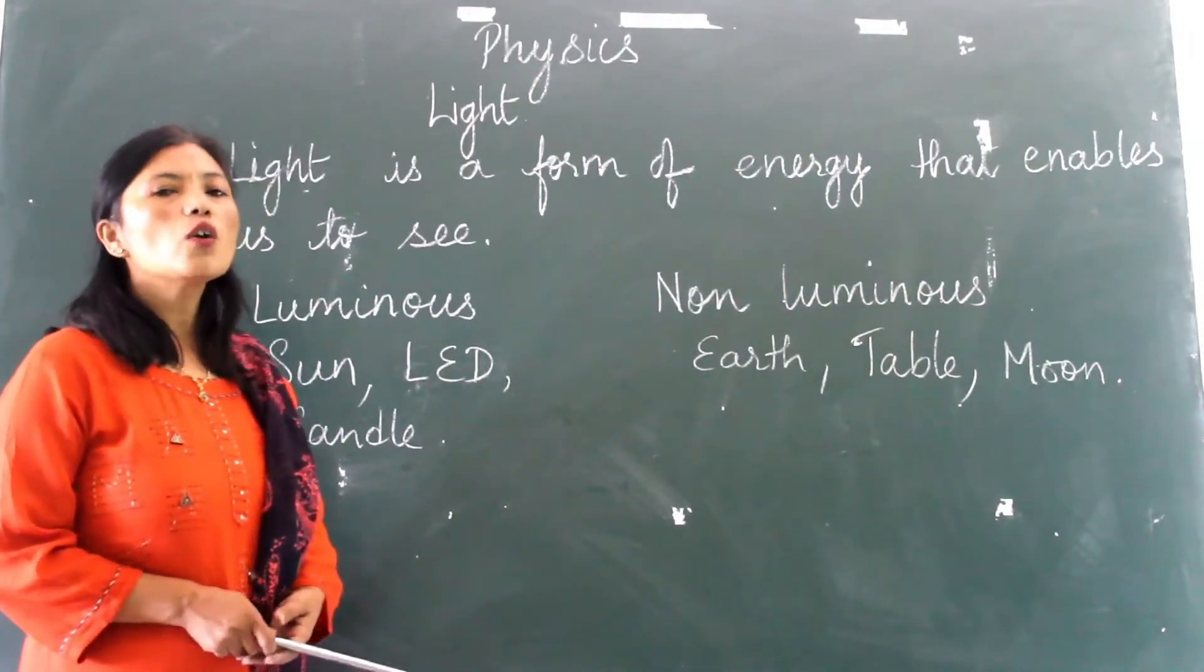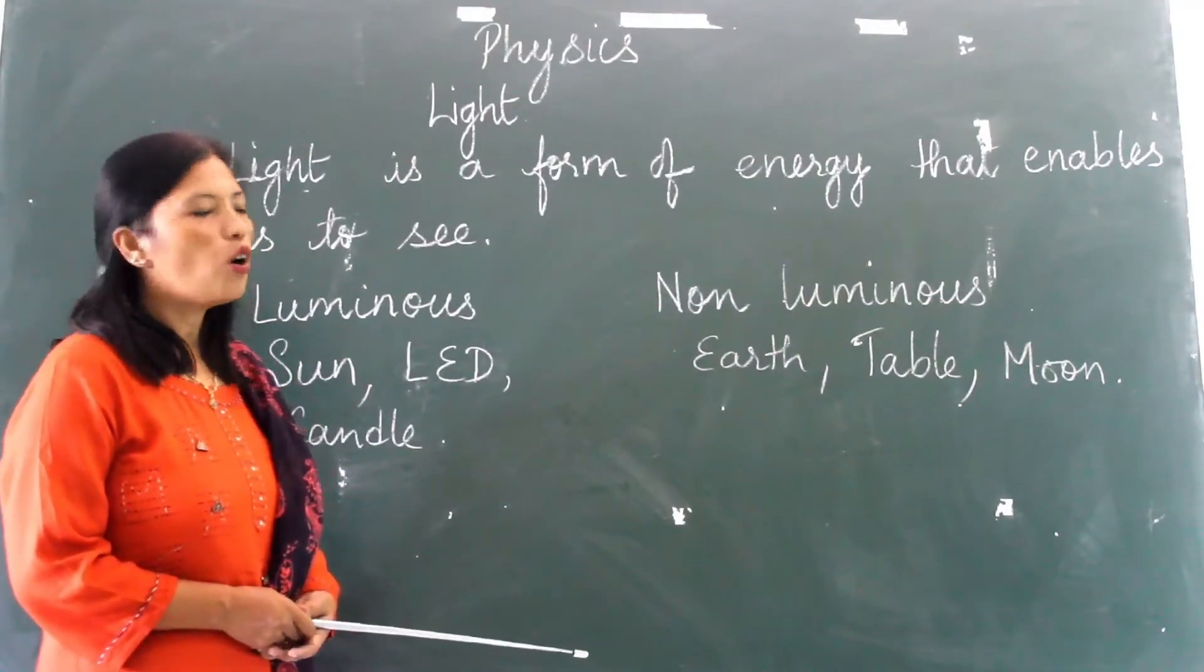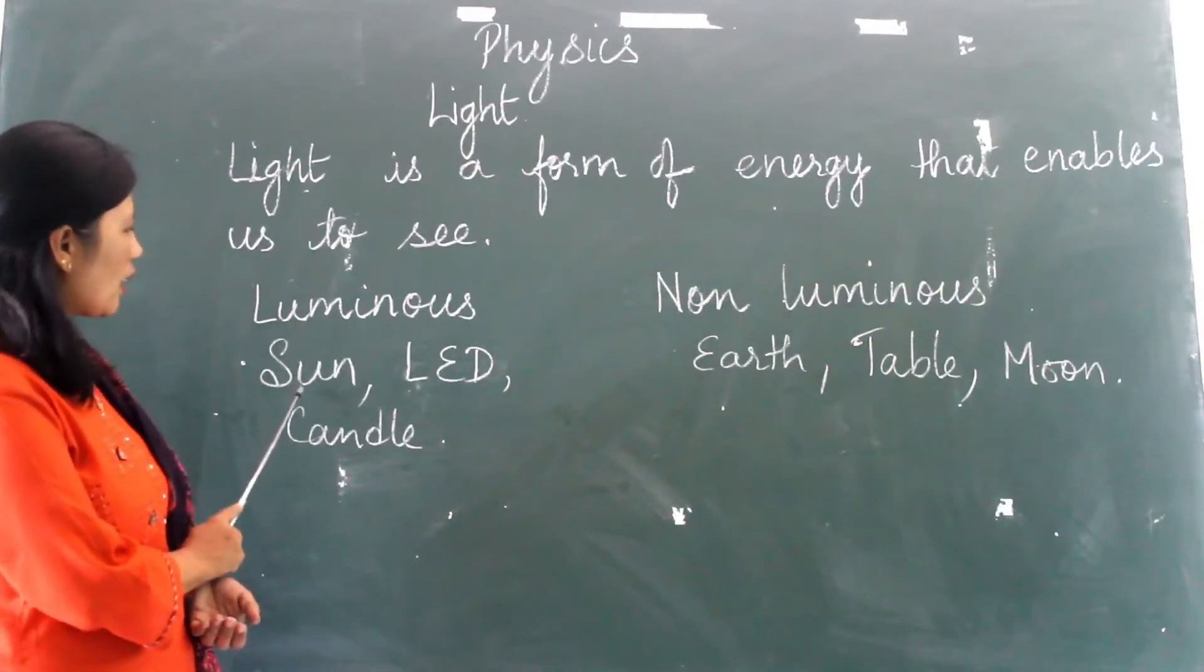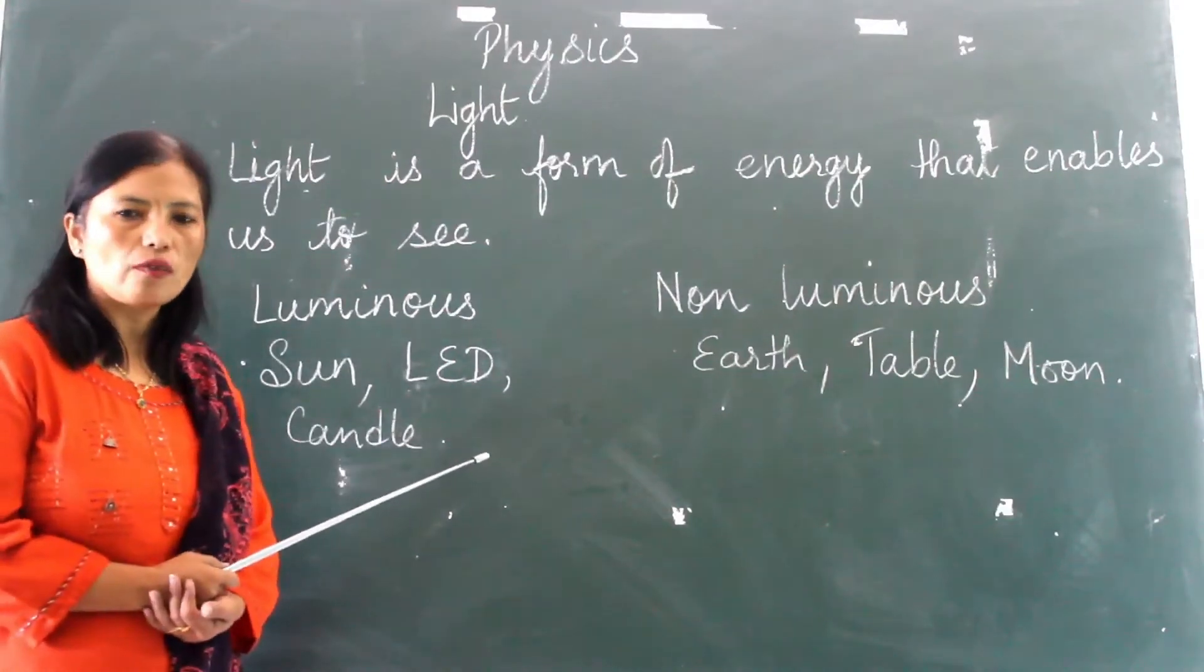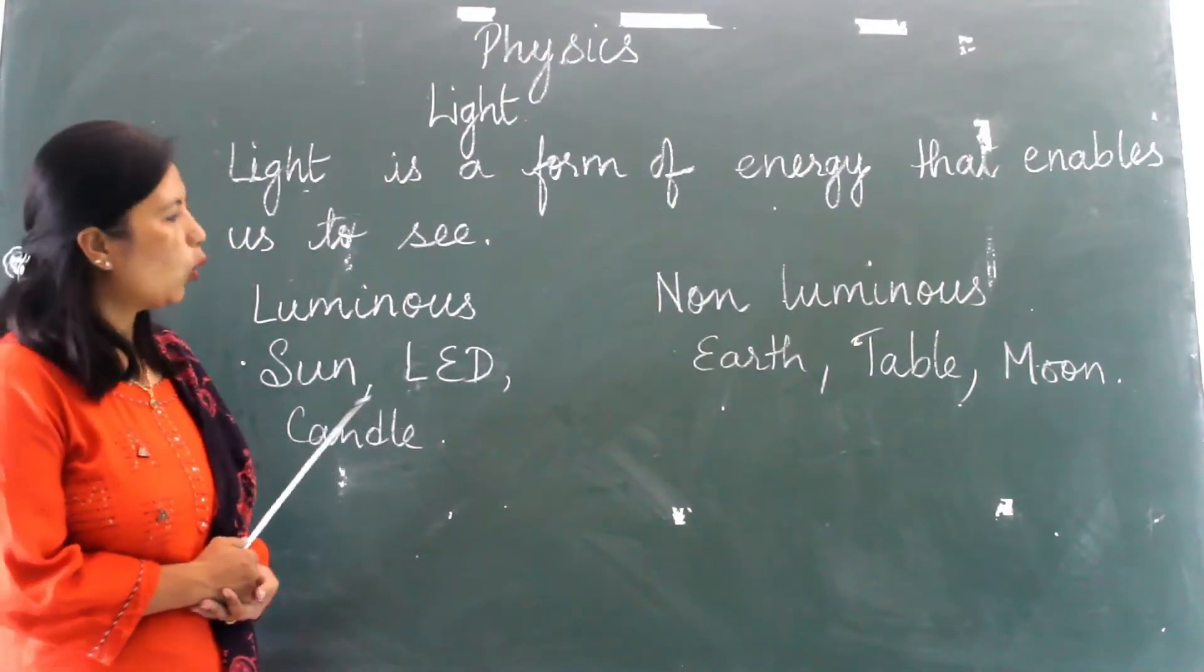Things which give out light are also known as sources of light or luminous objects. For example, the Sun, your LED bulbs, candle—all these are sources of light because they give out light on their own.